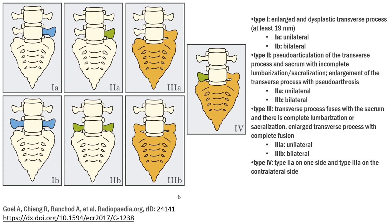Type 2a is unilateral pseudo-articulation of the transverse process and sacrum with incomplete lumbarization or sacralization, and large open transverse process with pseudo-arthrosis.